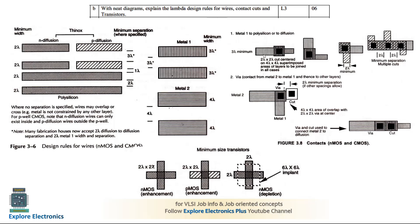For contact cuts: a contact cut comes into picture when metal is contacted with a diffusion, or polysilicon is contacted with a metal, or polysilicon is contacted with a diffusion — when two different layer types are connected, we call it a contact cut. For example, Metal 1 and polysilicon connected: Metal 1 has 3 lambda width and polysilicon has 2 lambda, and the contact cut connecting them has size 4 lambda × 4 lambda.